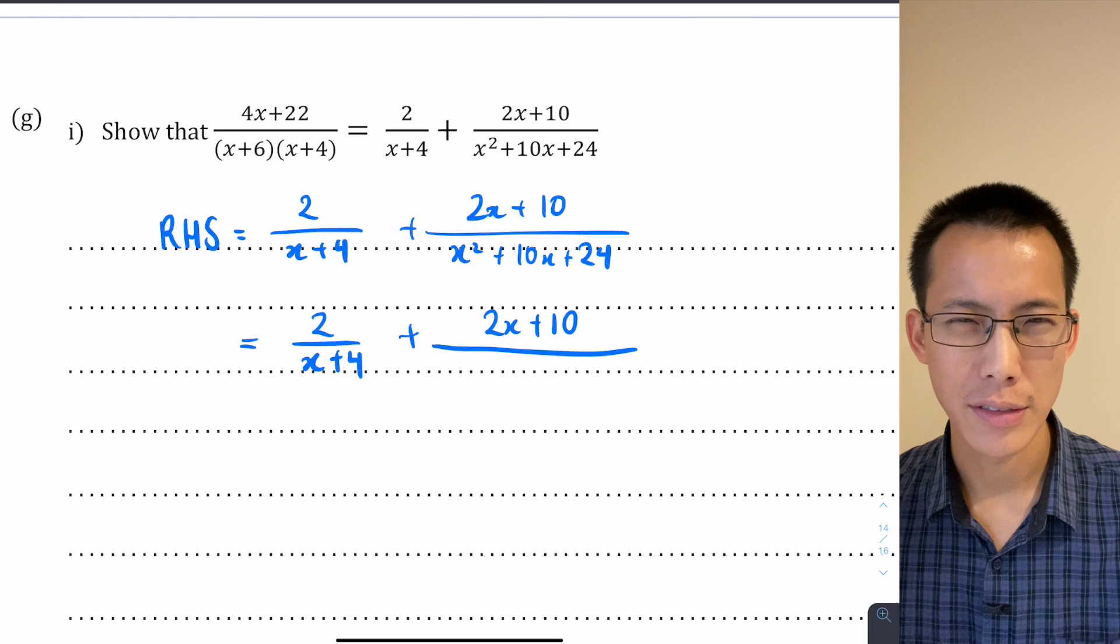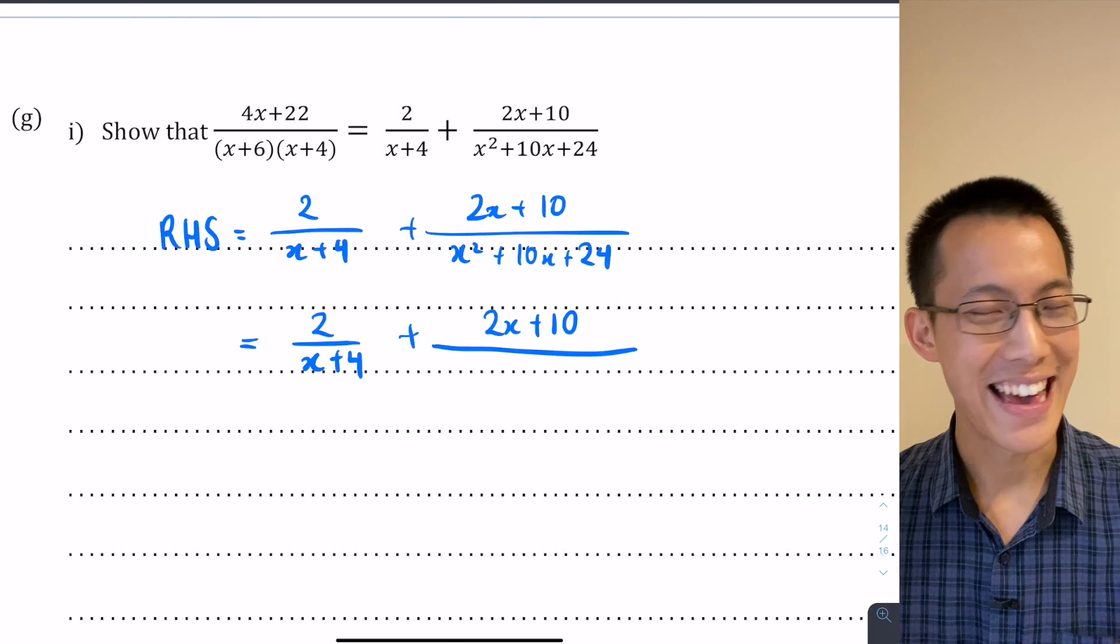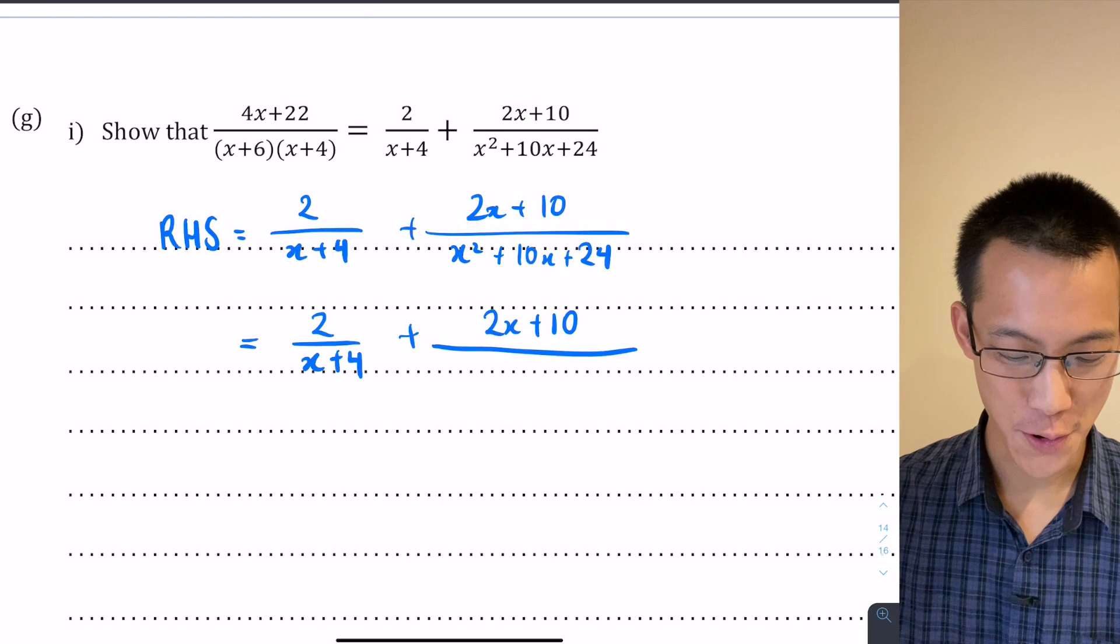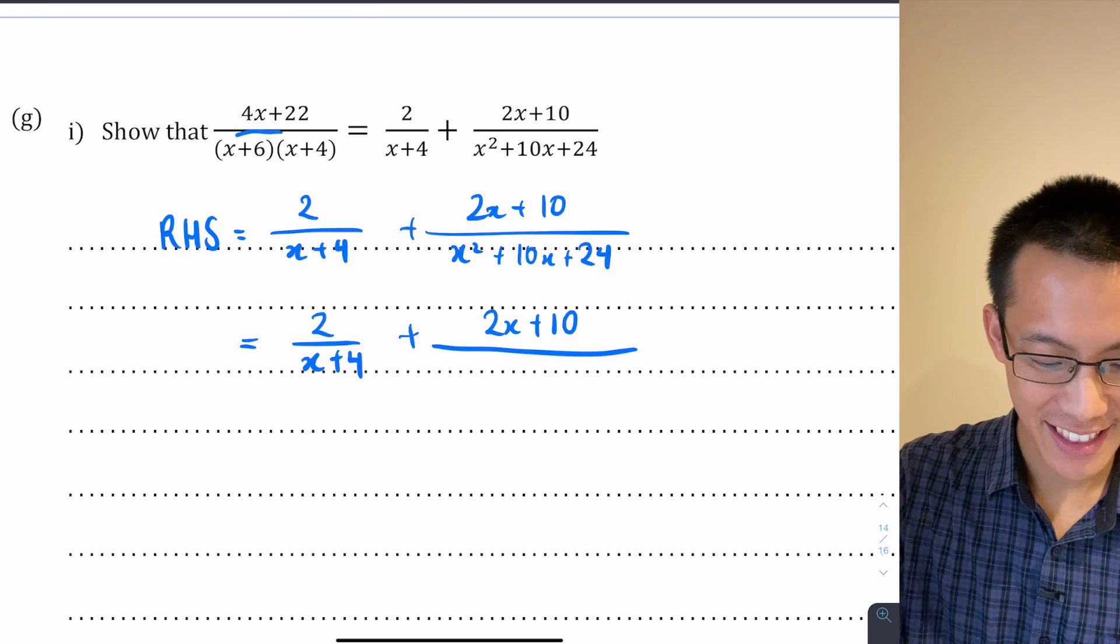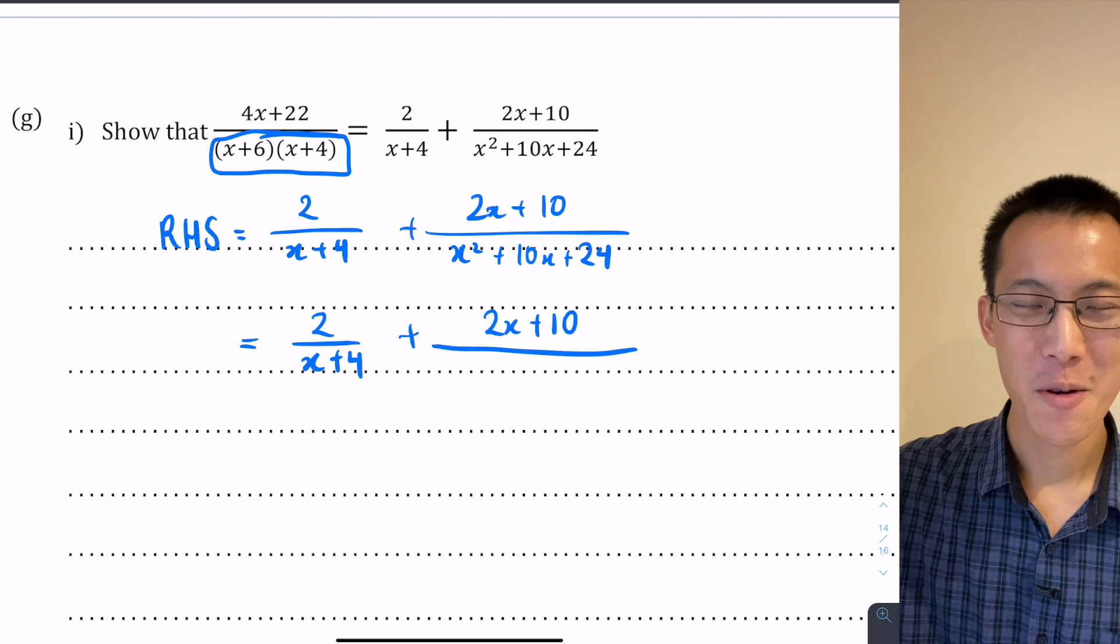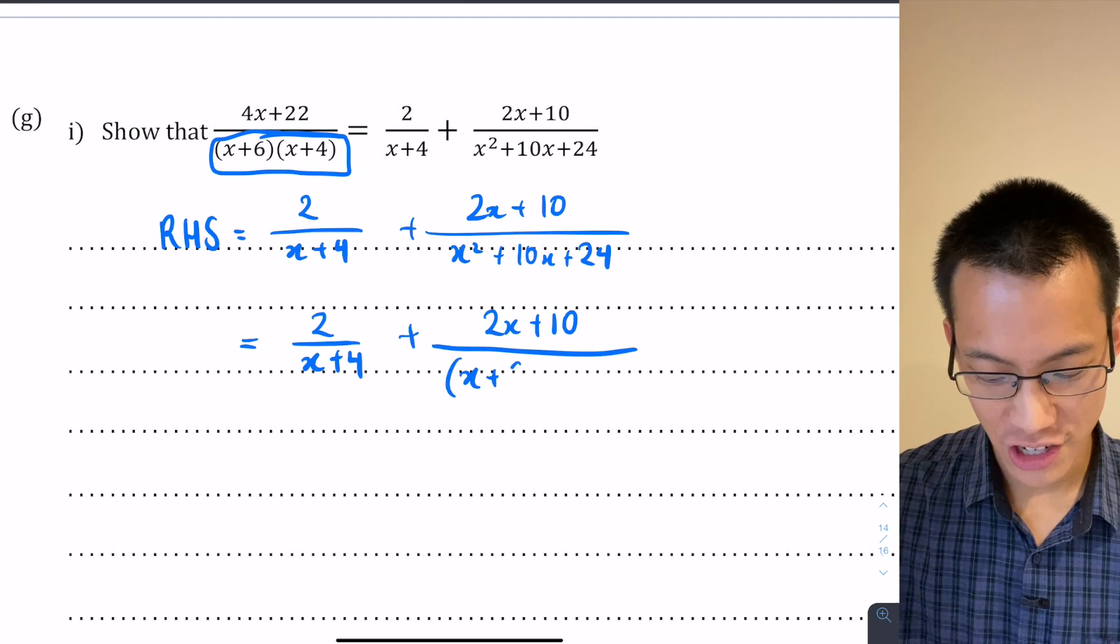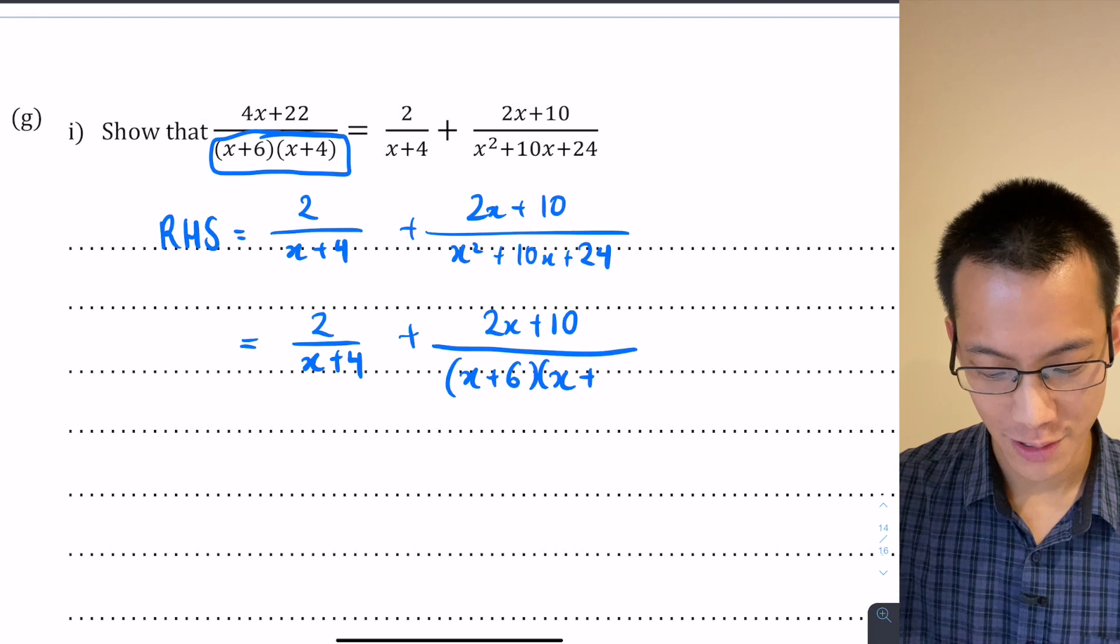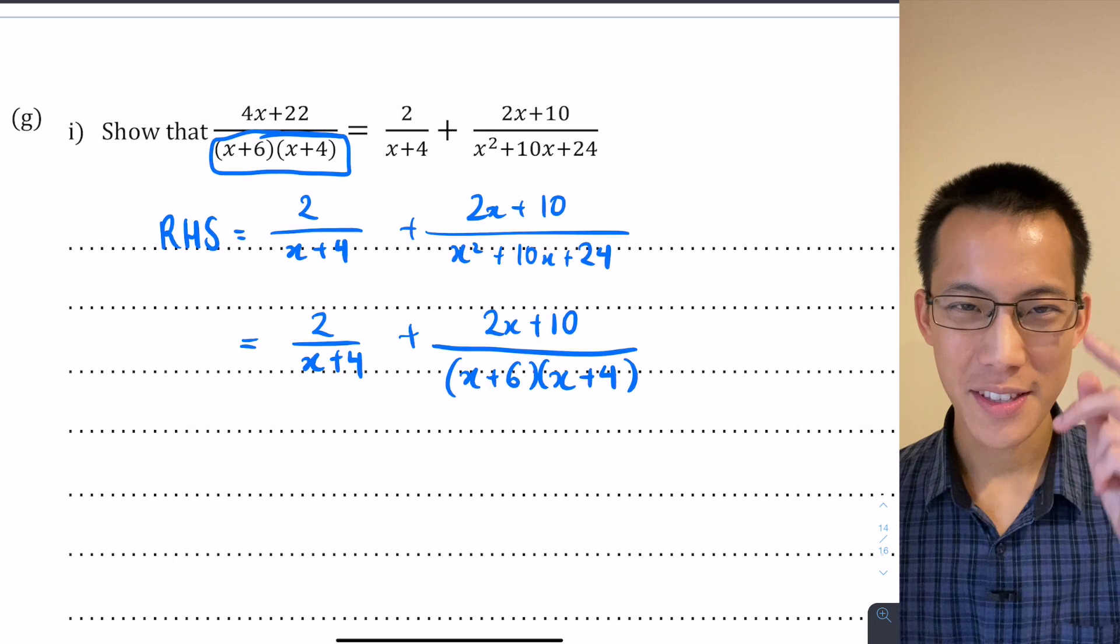On the right hand side here I've got 2x + 10, and on the denominator I've got this quadratic expression x² + 10x + 24. So I want to factorize this. I'm searching for a pair of numbers that add to 10 and multiply to 24. You've got a big hint in the original question. I'm thinking it's highly likely I'll end up with (x+6)(x+4), and sure enough if you go ahead and check, that is indeed what you get.